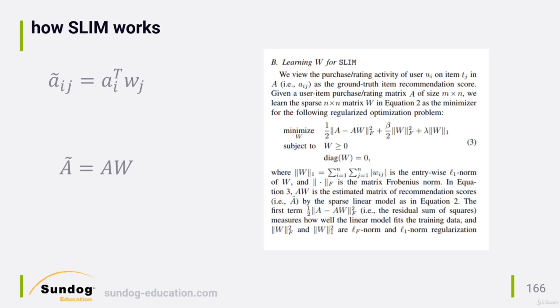Still, you can't argue with SLIM's results, so if you see it offered as part of a machine learning library you're working with, it's definitely worth your time to experiment with it. The research community has taken note, and some extensions on SLIM have emerged, such as Contextual SLIM and Higher Order SLIM or HO SLIM.